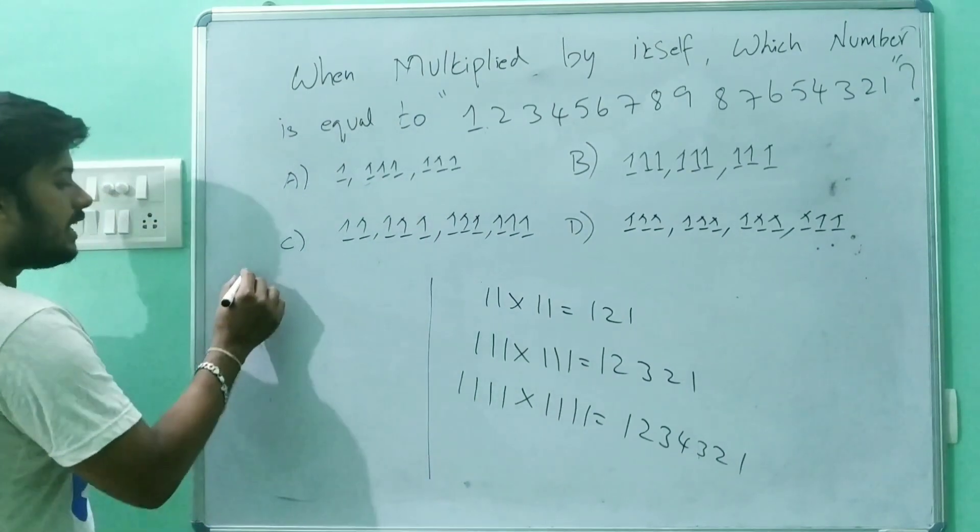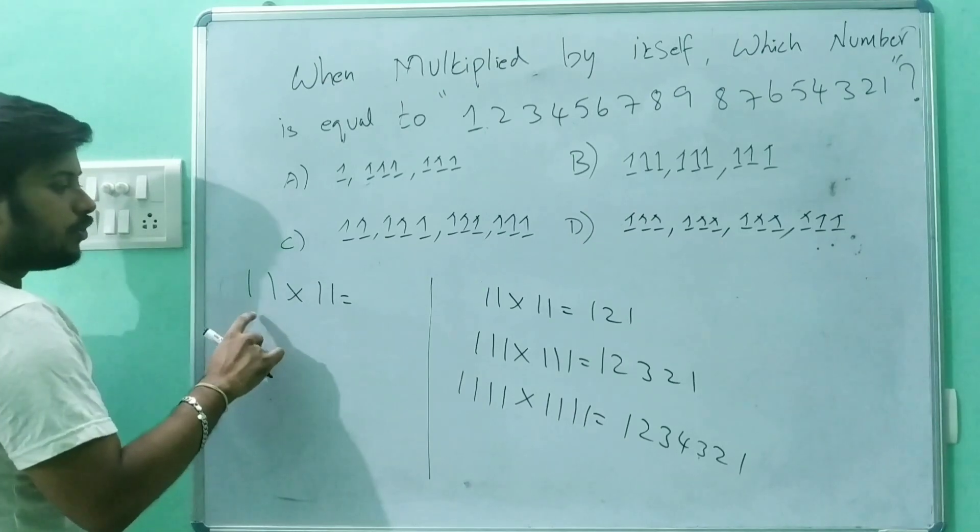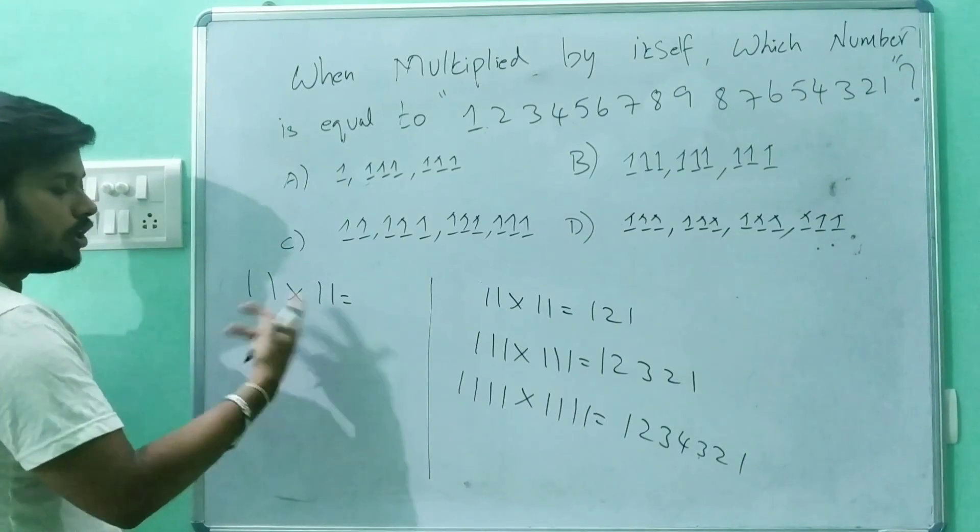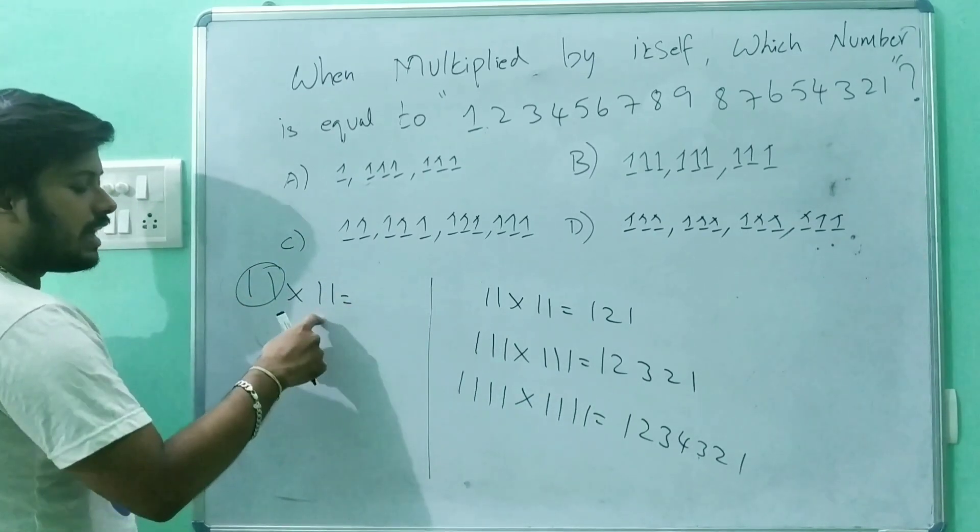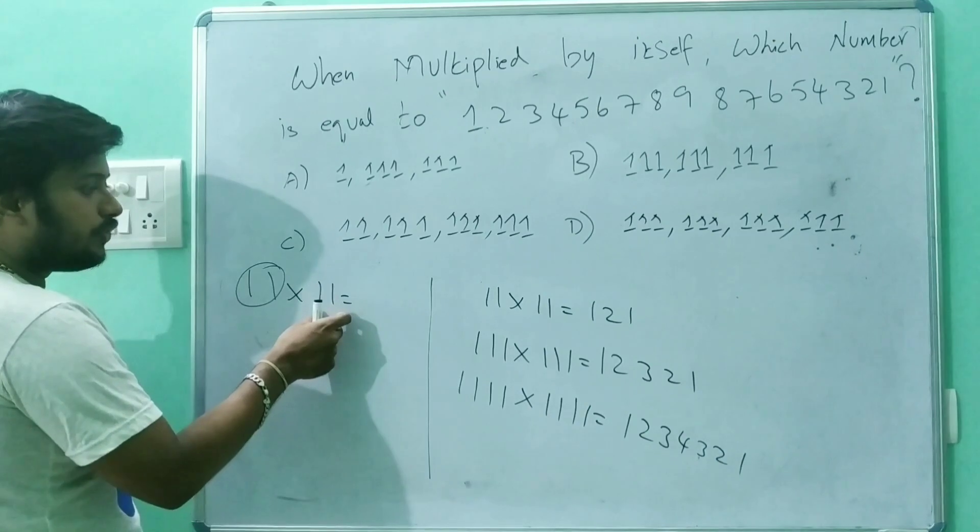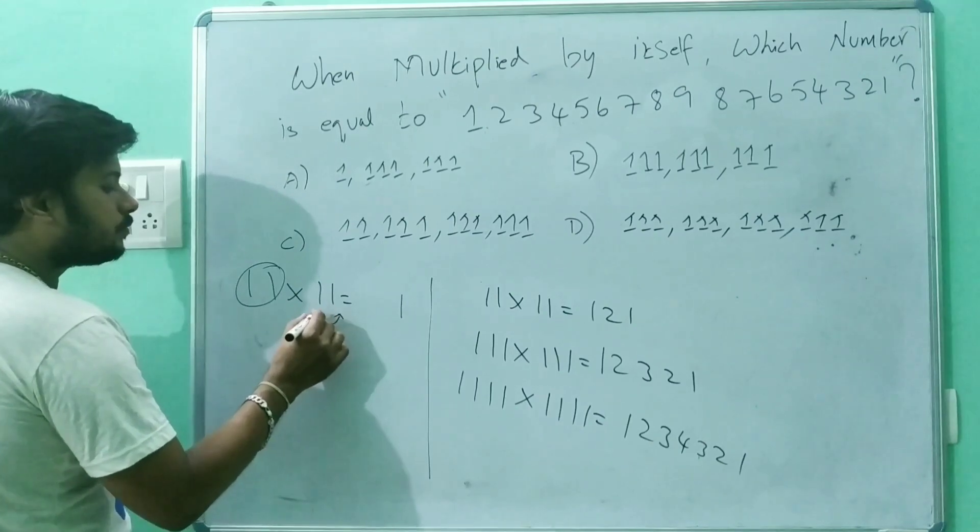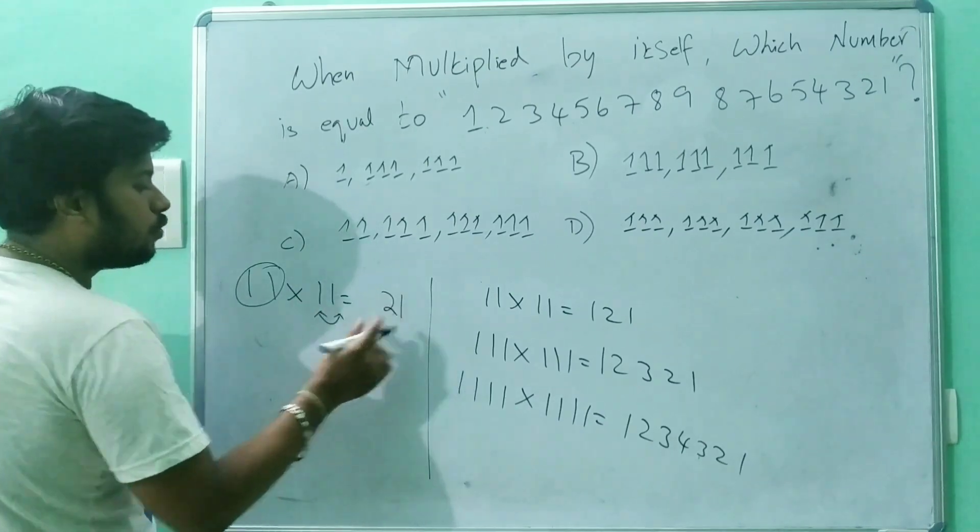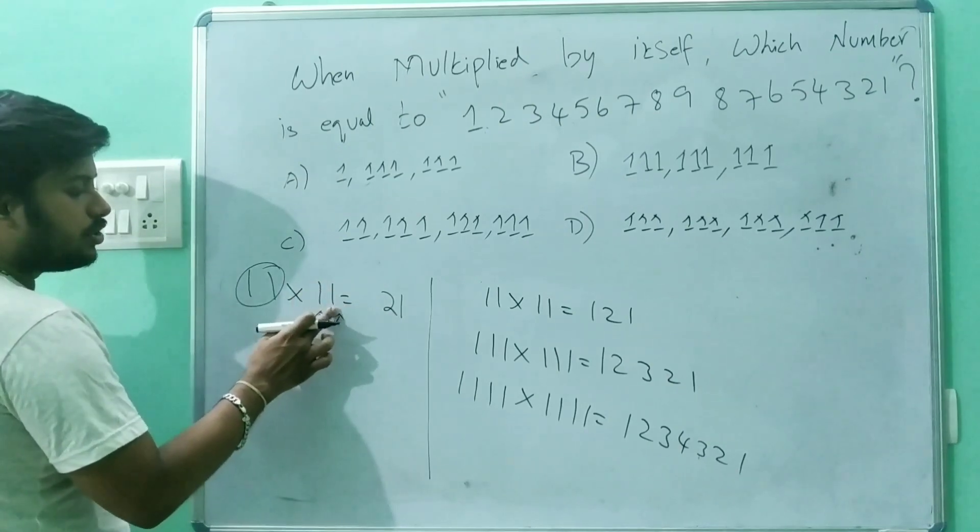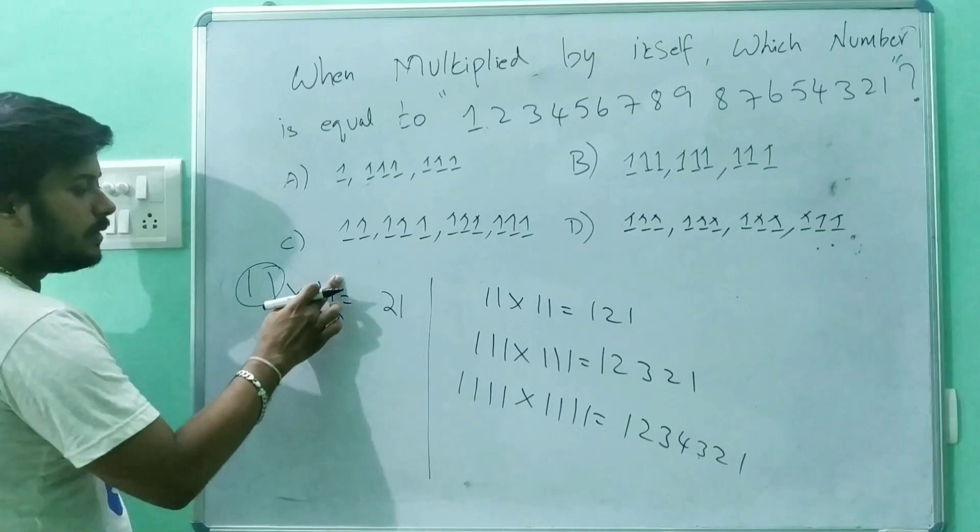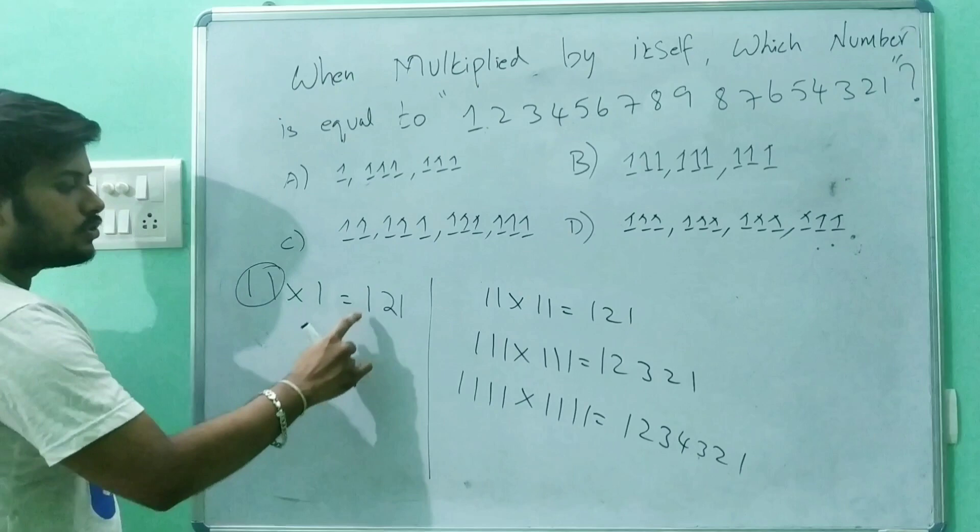So 11 into 11. This rule is applicable when you're multiplying numbers with 11 or triple one or four ones. How to find the value: start with the last digit, one. Now add the two digits. One plus one equals two. Once you've added all the digits, remove the digit from the unit place. So you get 121.